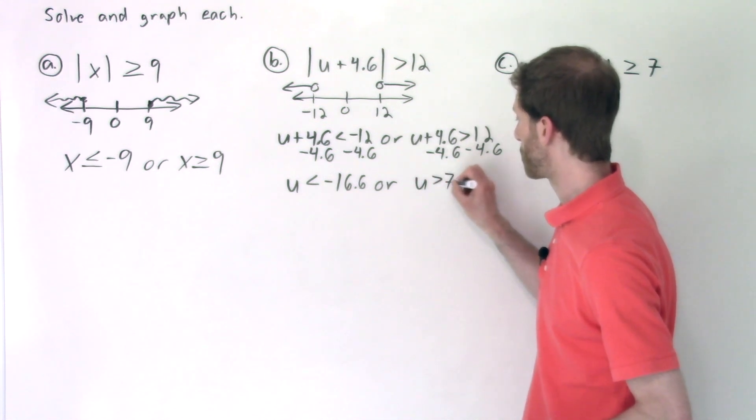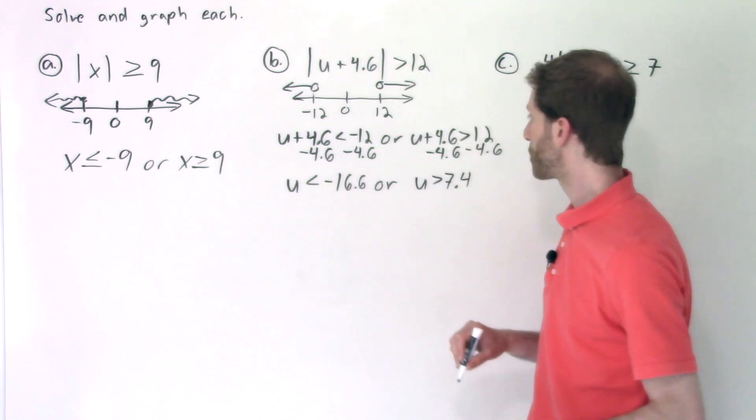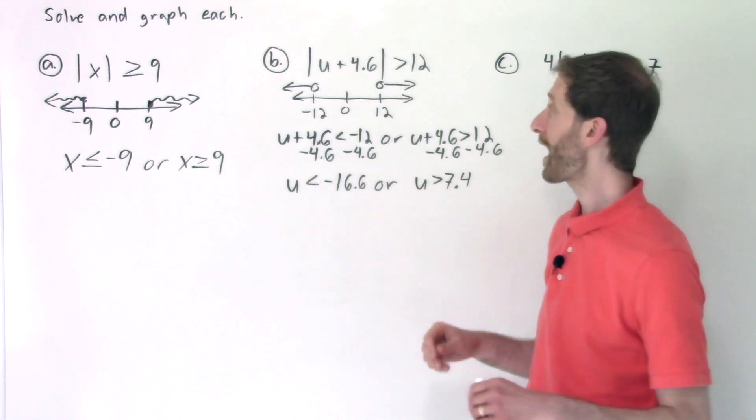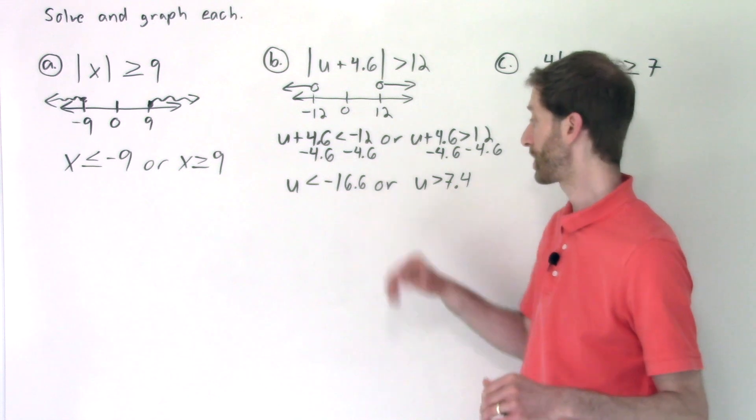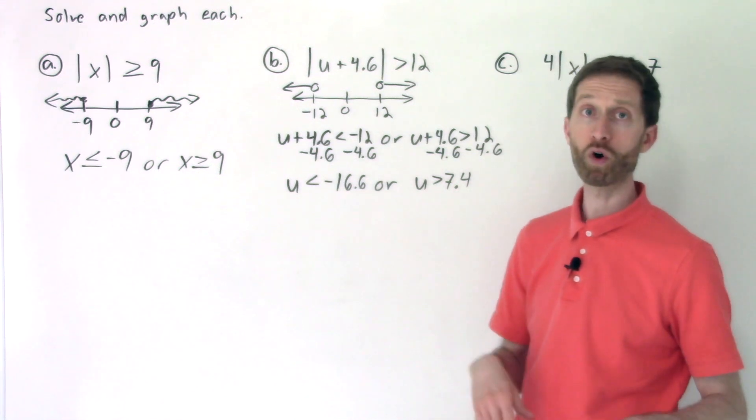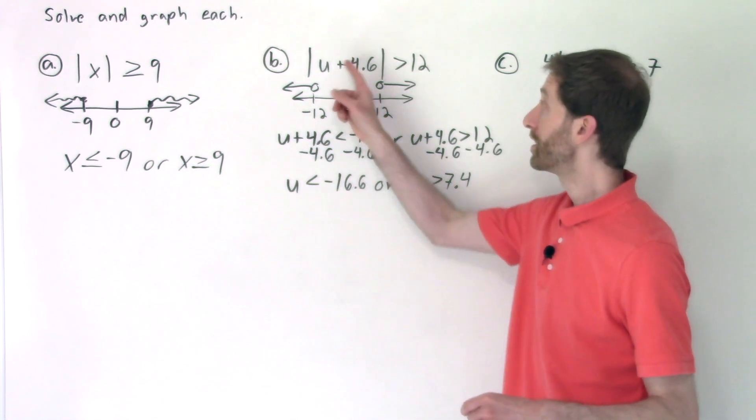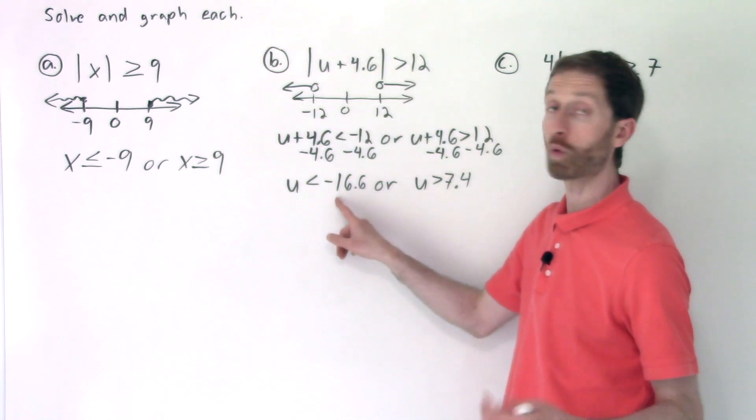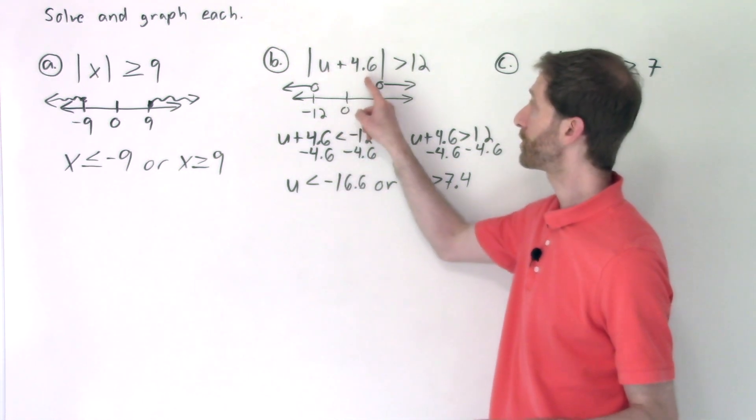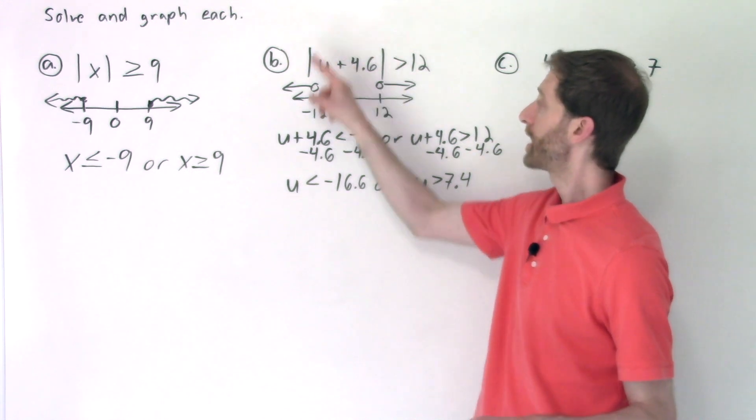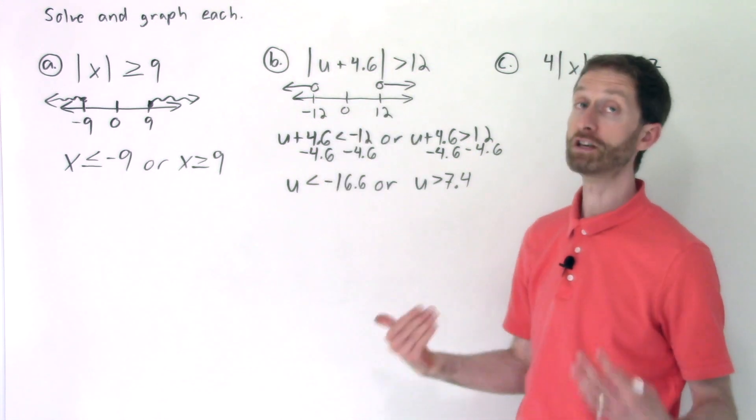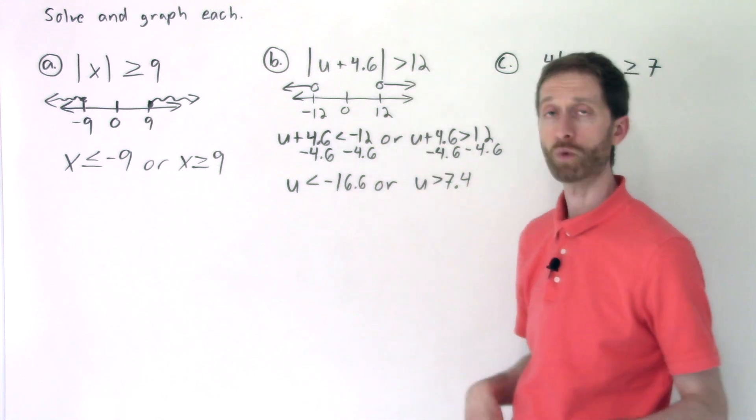So U is greater than 7.4. So those are the two boundaries that we have. And if you plug in numbers to the left of 16.6 or the right of 7.4, you will get correct values that work in here. So like negative 20, negative 20 plus 4.6, that's going to be negative 15.4. The absolute value of which is 15.4, which is more than 12.